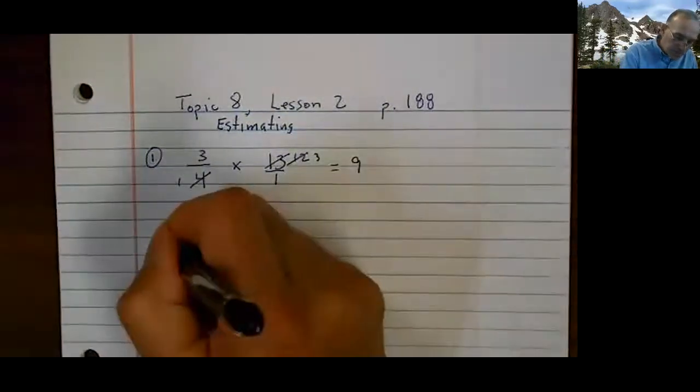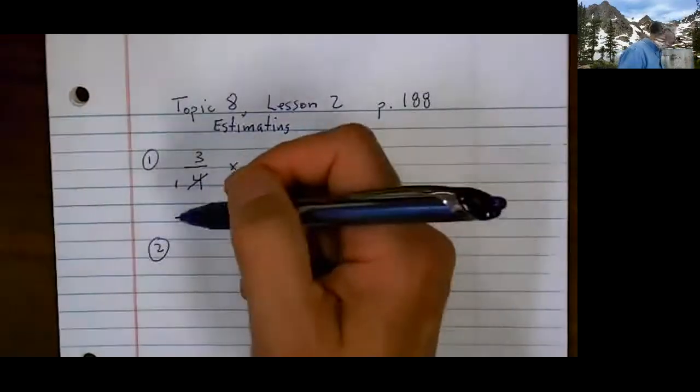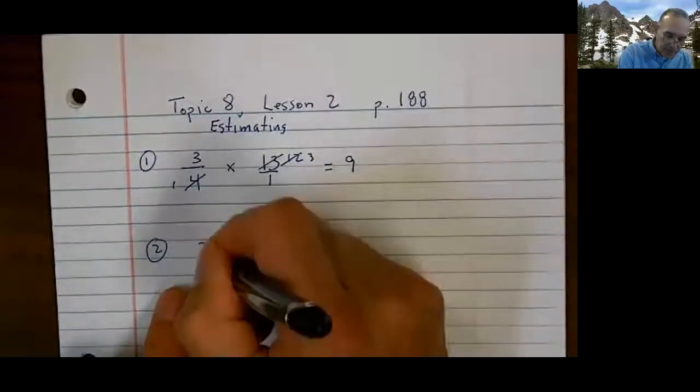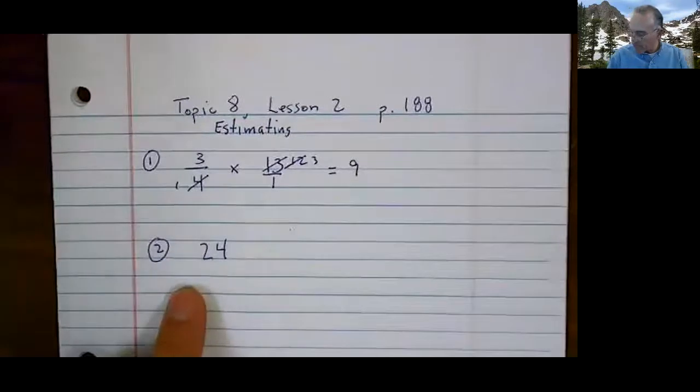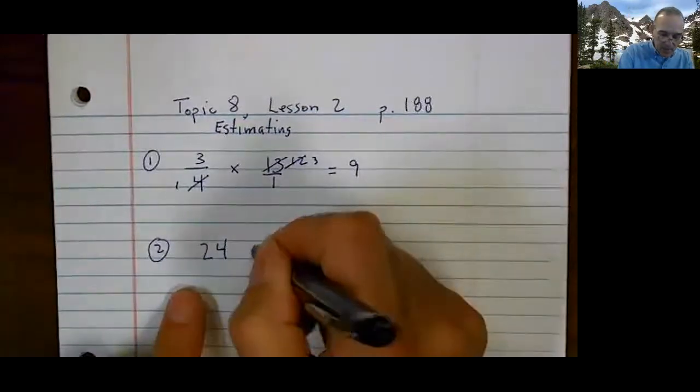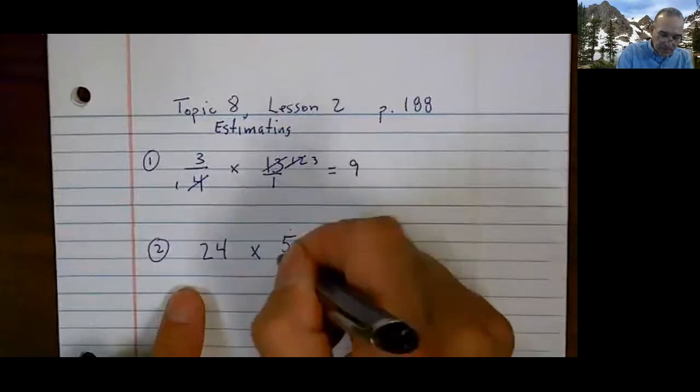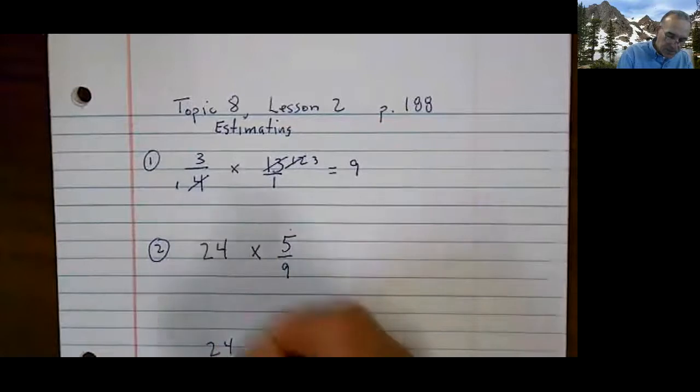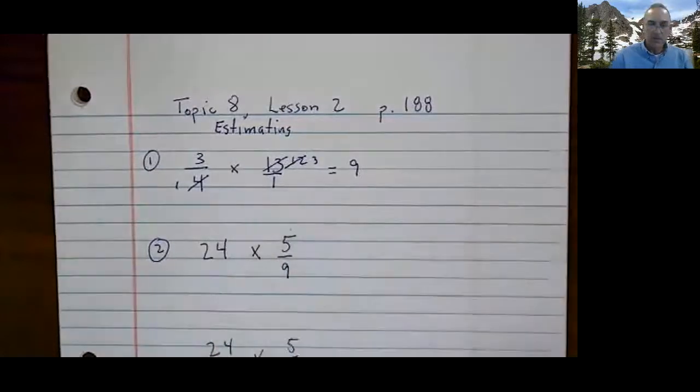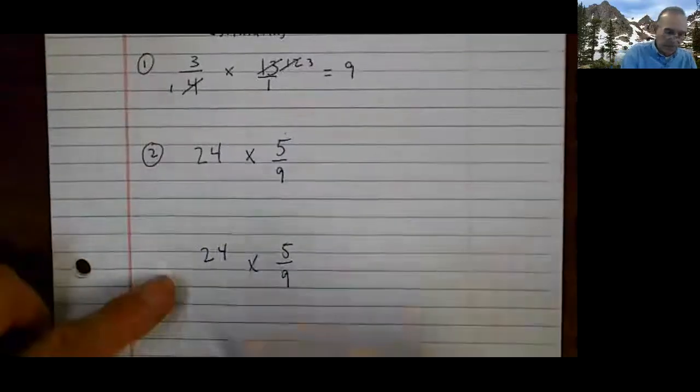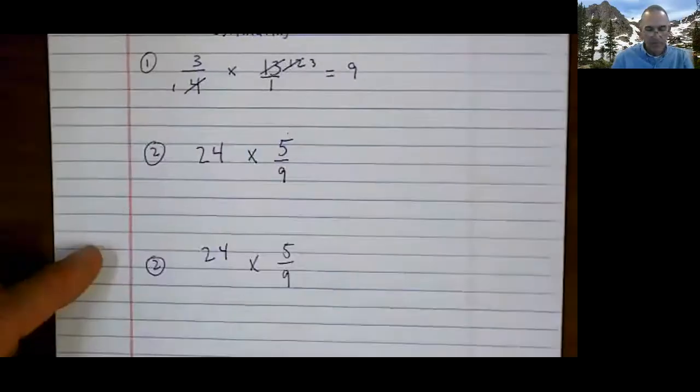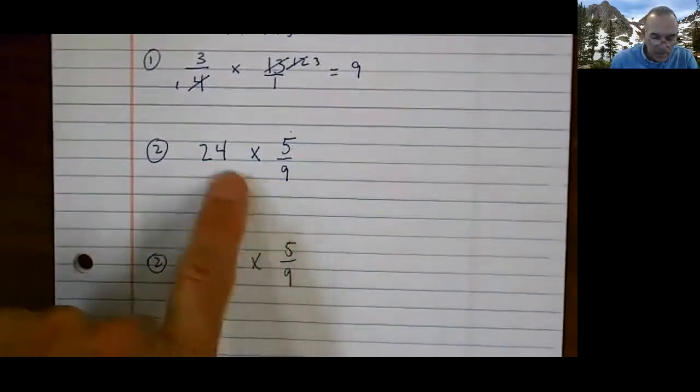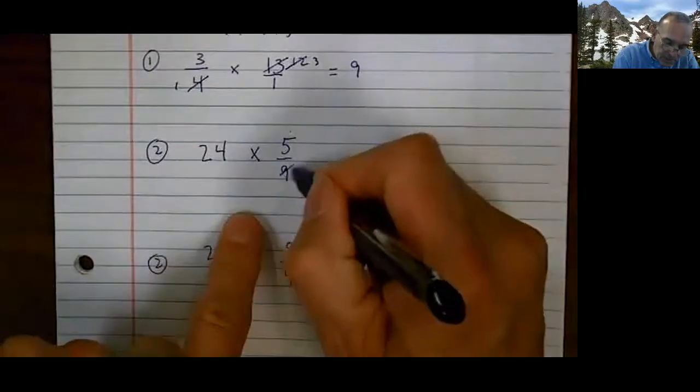Watch this one. Here's number 2. It looks like, let me make sure I copy it right. I'm taking these right from page 188. 24 times 5 ninths. Oh, I see this one. Let me show you this one two different ways. Watch how two different people could round this problem, how we could round this differently.